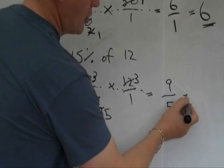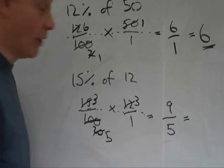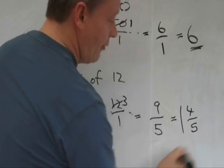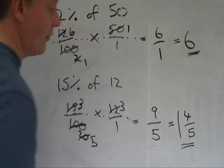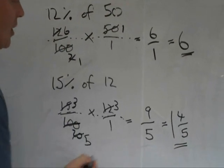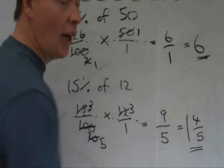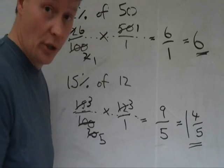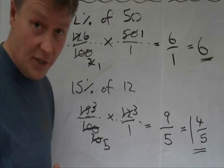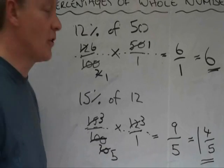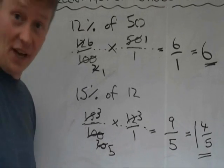And if you want, you can change that then to a whole number, which is 1 and 4 fifths. So, a whole number plus a fraction. So, the question 15% of 12 is 1 and 4 fifths. If you wanted to, you could convert that to a decimal. And if you look at one of the other videos, that will show you how to convert fractions to decimals.